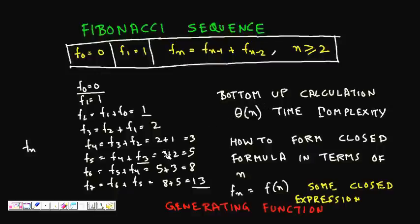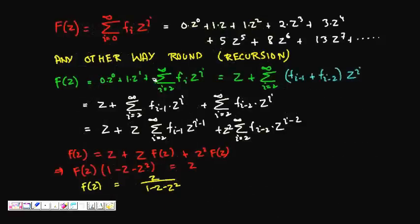But the question is: can we improve? Can we find a closed-form formula for this and calculate it in constant time — Θ(1)? Can it be done for the Fibonacci sequence?